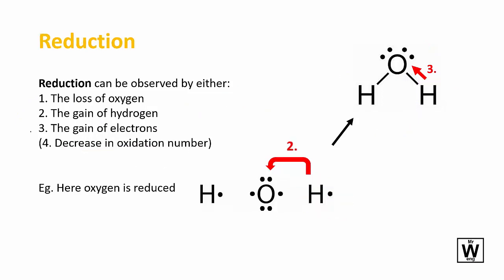Looking at the reverse, everything's reversed for reduction. So now it's the loss of oxygen, the gain of hydrogen, the gain of electrons, and later on we'll look at a decrease in oxidation number. So here you can see that what has been reduced is the oxygen because it has gained hydrogen.